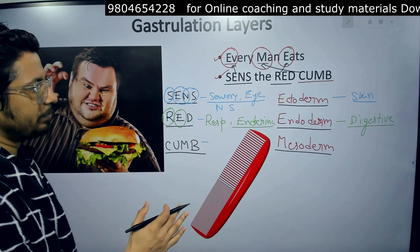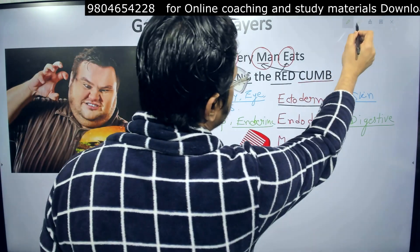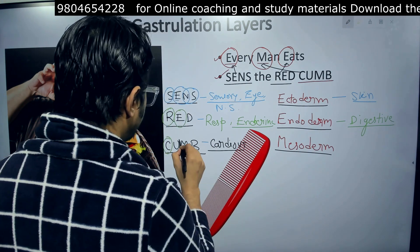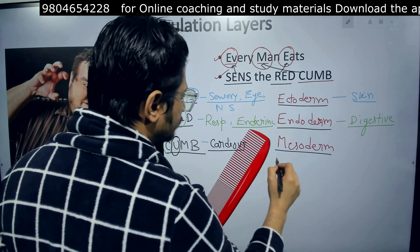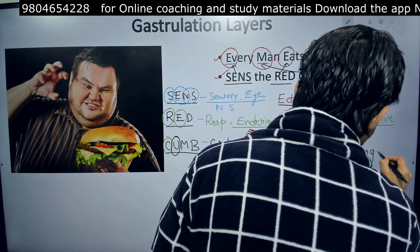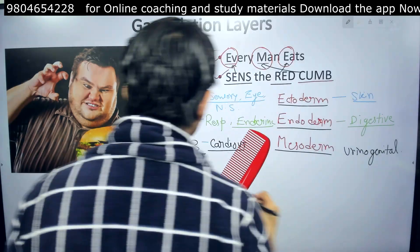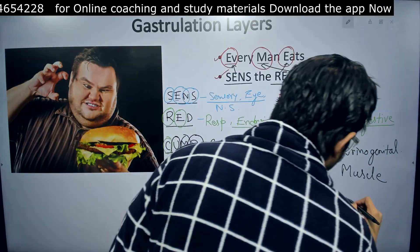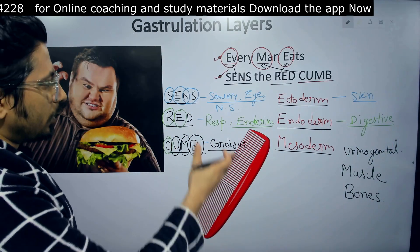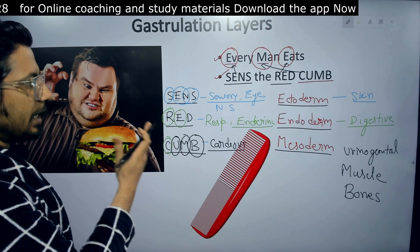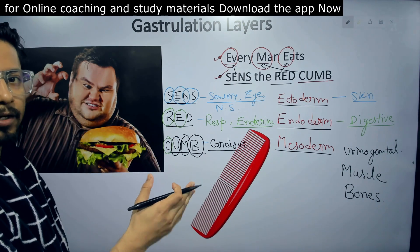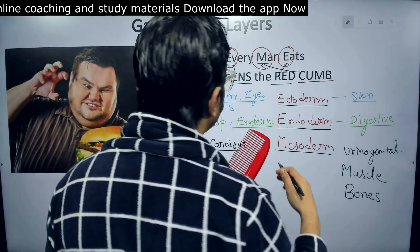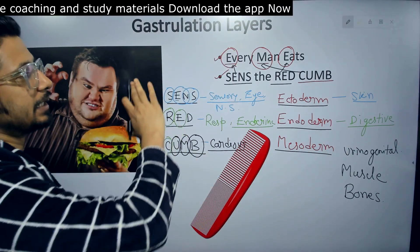Last, we have CUMB for mesoderm. C is for cardiovascular system, U is for urogenital system, M is for muscle or muscular system, and B is for bones. So for mesoderm: cardiovascular system, urogenital system, muscular system, and bones. Muscle and bones are always produced from the mesoderm. Also remember, the notochord is actually originated from the mesoderm — that is the extra thing not written in the mnemonic.